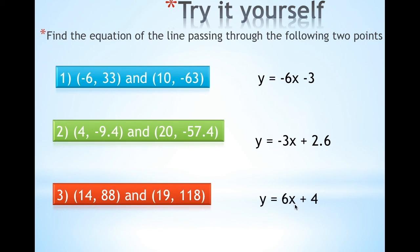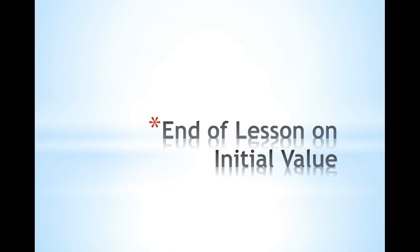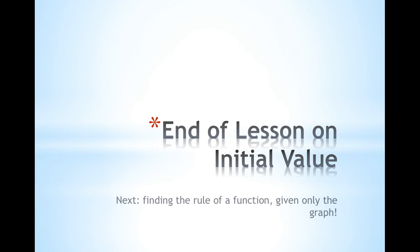And finally, you get here that your slope is 6. If you plug in any of these two points, you can solve that b is 4. That is the end of this lesson on initial value. Our next lesson will be on finding the rule of a function, but this time only given a graph on a Cartesian plane.